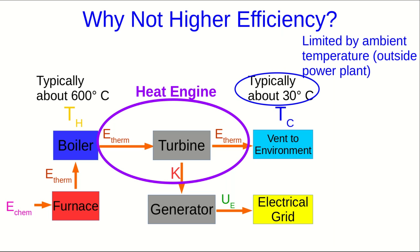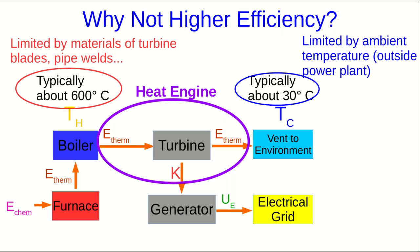Both TC and TH are fixed by fairly practical considerations. TC is set by the ambient temperature outside the power plant, so we can't do very much about that. TH, on the other hand, is fixed by technological considerations — it's limited by the materials of the turbine blades and pipe welds, and what temperatures they can tolerate. So increasing TH is actually a very difficult technological job of metallurgy and developing better metals. There are fairly major efforts underway to come up with better materials to improve the high temperature in power plants.